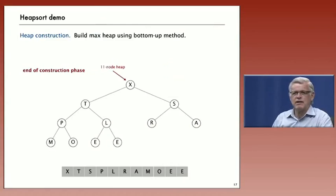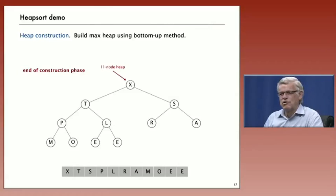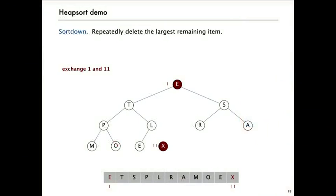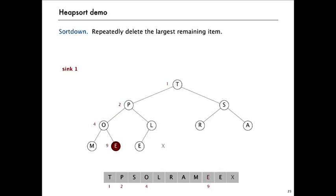Now we want to take advantage of the heap ordering to do a sort. The concept is very simple: right away we have the maximum element at the root, and we want it at the end. So we exchange the element at the root with the last element, pull it off the heap. We may have violated the heap-ordered condition, so we do a sink operation on E. E is smaller than both children; the larger child is T, so we promote T. Then P is larger than its children, so we promote P, and finally E comes down to the bottom. That's one step in the sort — we got the largest element off.